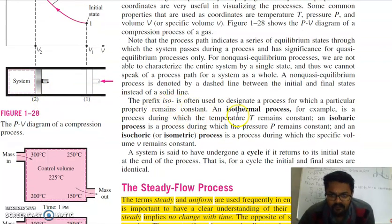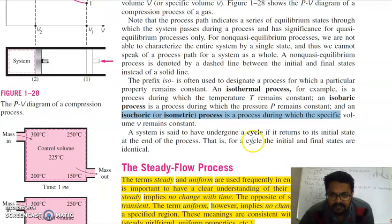Isothermal processes are those processes in which your temperature remains constant. For example, a process during which temperature remains constant. Isobaric are those during which pressure remains constant, and isochoric are those during which your volume remains constant. So these are the types of processes.